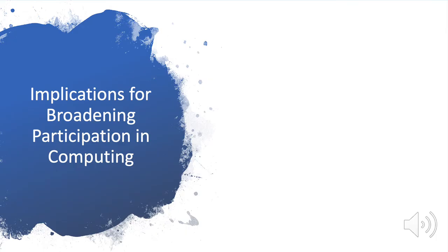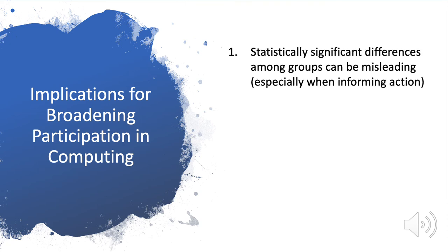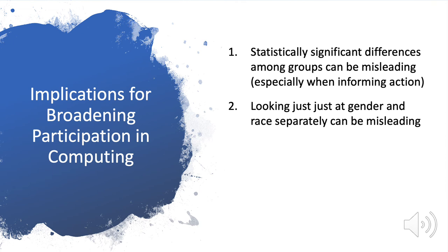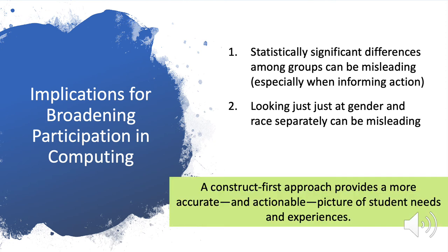So, what's the bottom line, particularly for broadening participation in computing? What does this different way of looking at statistical differences across demographic groups teach us? Using this technique, it becomes difficult to say, for example, that women are like this and men are like that. While there may be statistically significant differences between demographic categories, they can be really misleading. Average differences belie great variety within groups and overlap between the groups. Looking at gender and race separately can also be misleading, hiding important differences between subgroups. The bottom line is that a construct-first approach provides a more accurate and actionable picture of student needs and experiences.